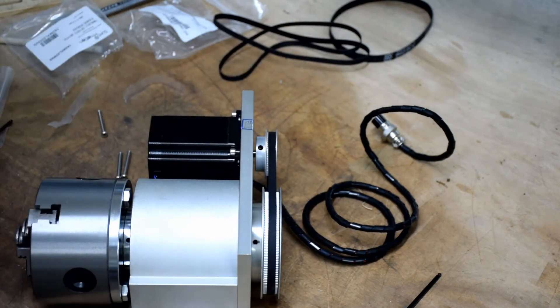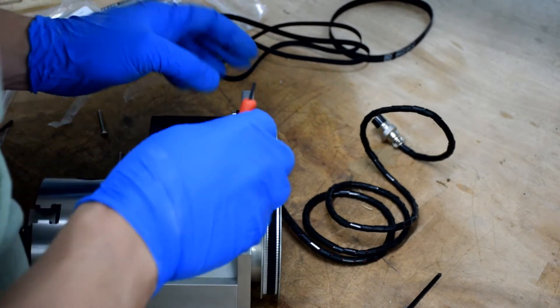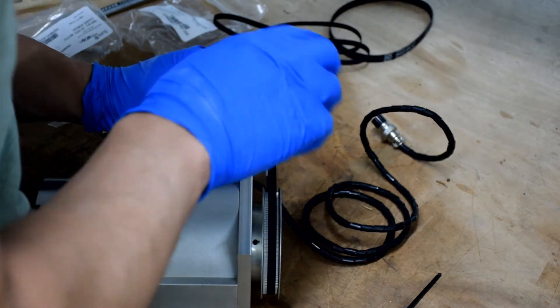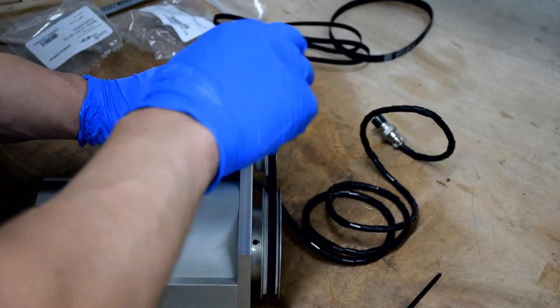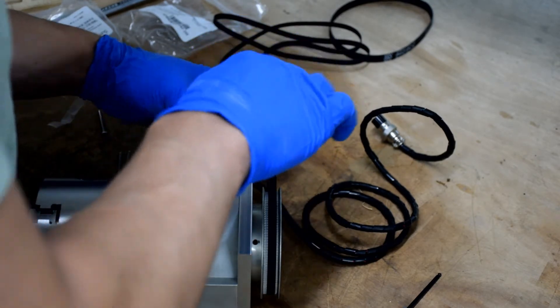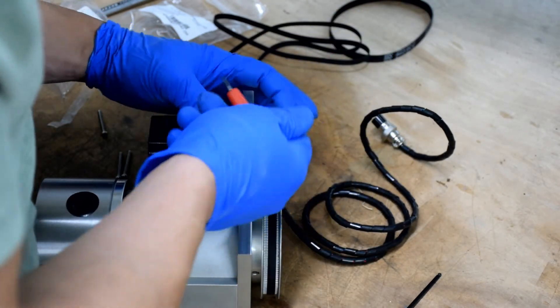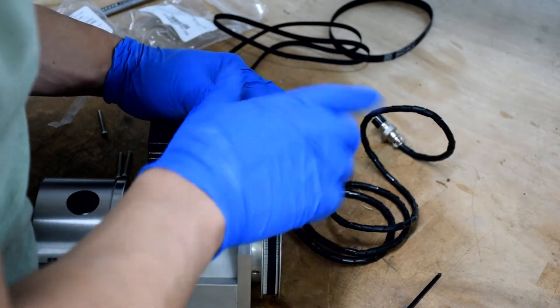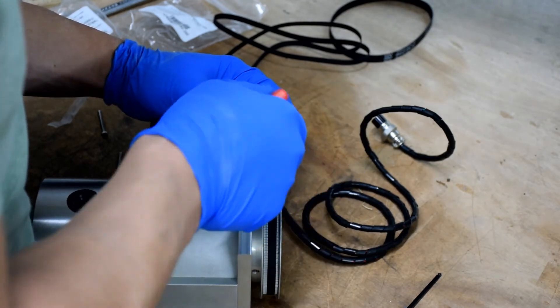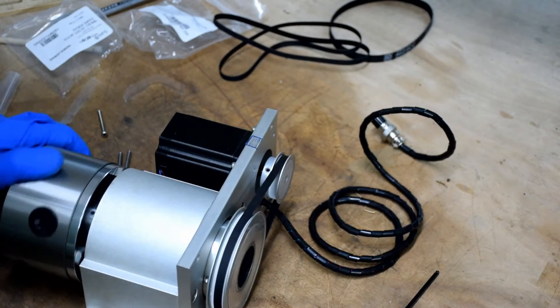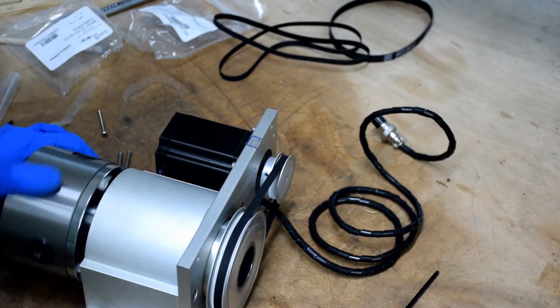But I will caution you on these smaller wrenches. If you wrench too hard, it can be easy to snap these things. The metal's hard, but it's brittle. Ask me how I found that out. And there we are. I'm pretty happy with that one.